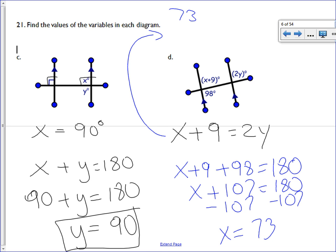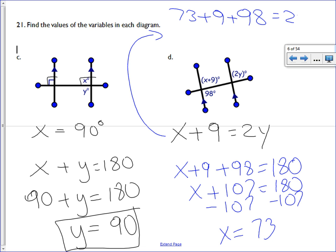So 73 plus 9 plus 98 is equal to 2Y. Now you can use this equation to figure out what Y is. So let's combine like terms on the left side. So we have 98 and 9, it gives us 107.